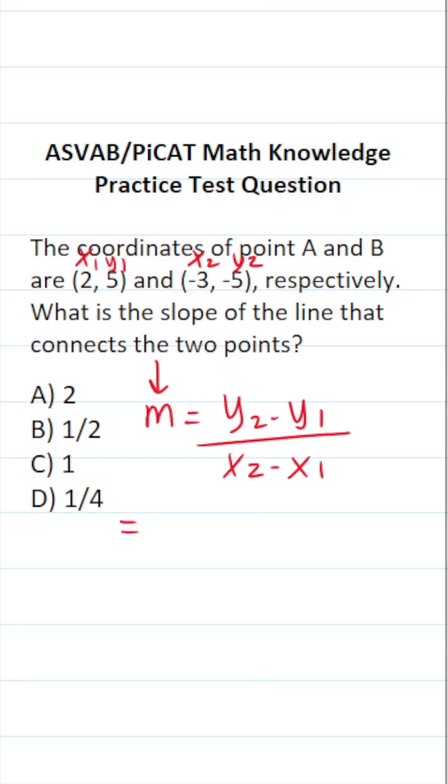let's go ahead and plug those in and solve for slope. Y2 is negative 5. So this is negative 5 minus Y1 is 5 all over X2, negative 3 minus X1 is 2.